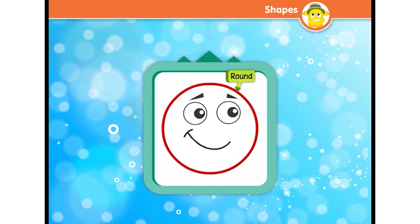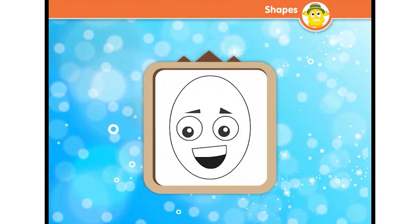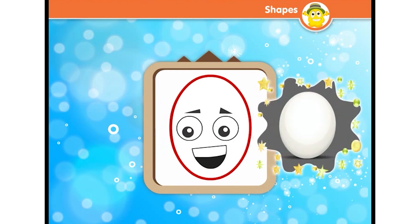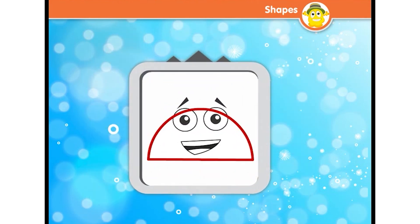I am round and have no edges, corners, or sides — who am I? I am a circle! I look just like a stretched circle, similar to an egg — who am I? I am an oval! I am just like a half circle — who am I? I am a semicircle!